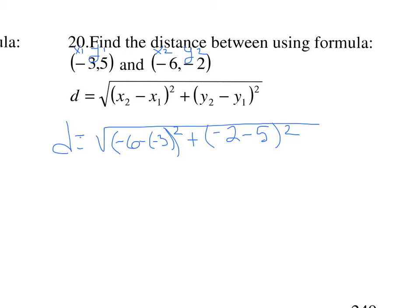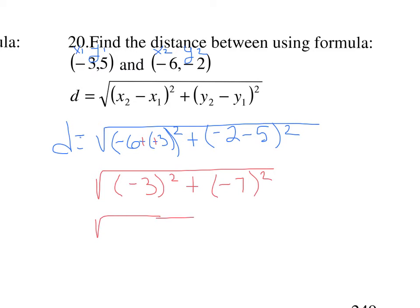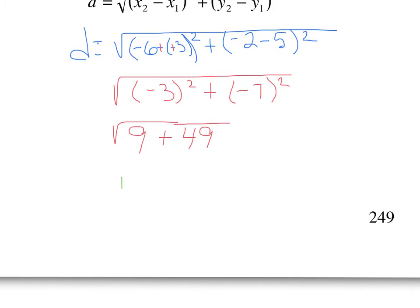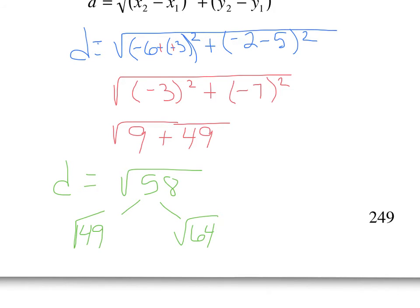We have double negatives, which we can cancel. So this becomes negative 6 plus 3, giving negative 3 squared, plus negative 2 minus 5 is negative 7 squared. Negative 3 squared is 9 and negative 7 squared is 49. So we have 9 plus 49, which is 58. Unfortunately 58 is not a perfect square, so we estimate: it falls between the perfect squares 49 and 64, with square roots 7 and 8. Since 58 is closer to 64, this is approximately 7.7.